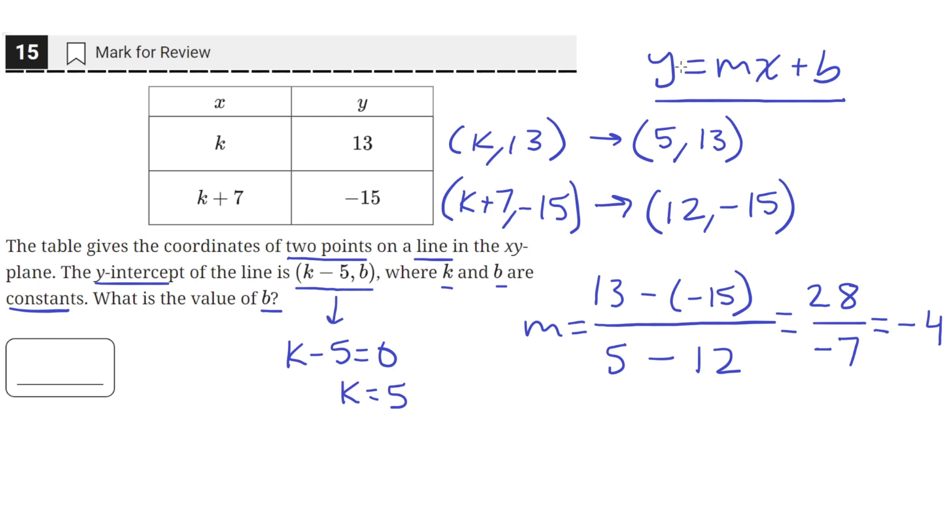Now that we have the slope, we can just plug in a point like (5, 13) to solve for b. So our current equation looks like y equals negative 4x plus b. Let's plug in the point (5, 13). So this will give us an x and a y value. So our y will be 13, and then our x will be 5. So 4 times 5. And then we'll solve for the value of b, which will give us the y-intercept.